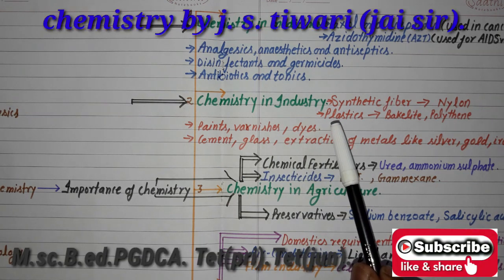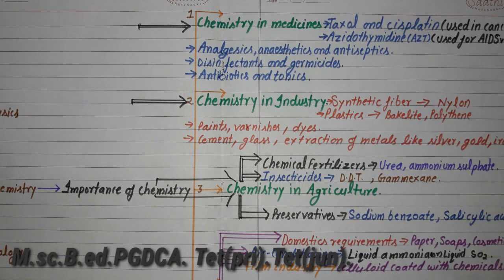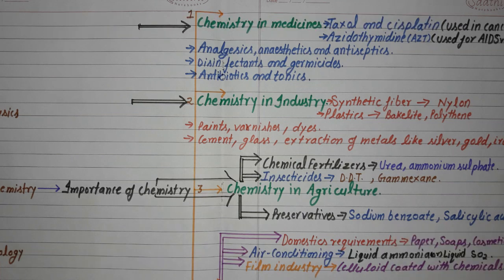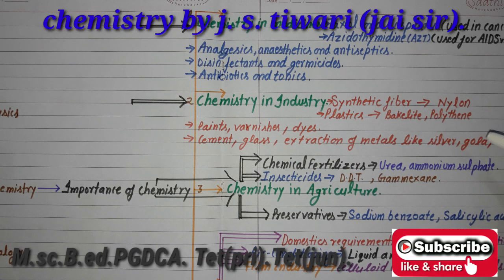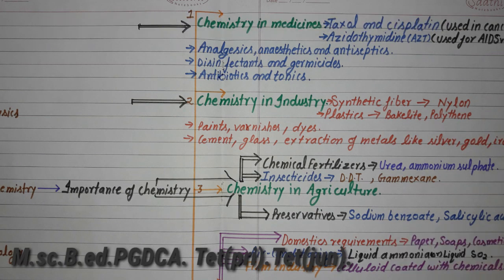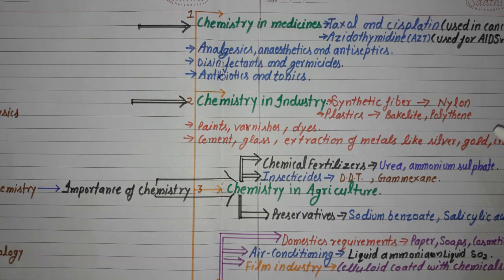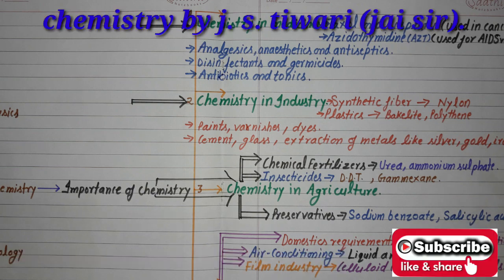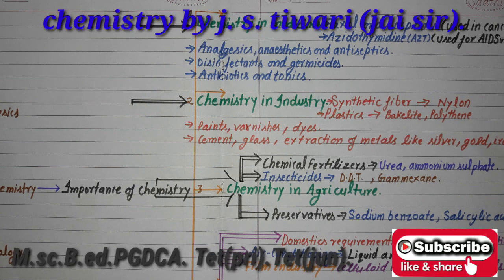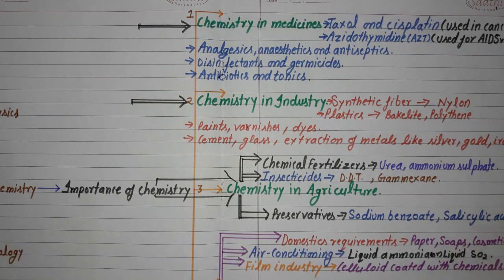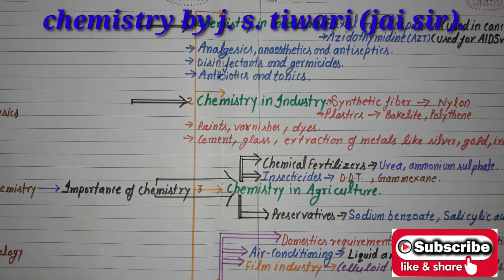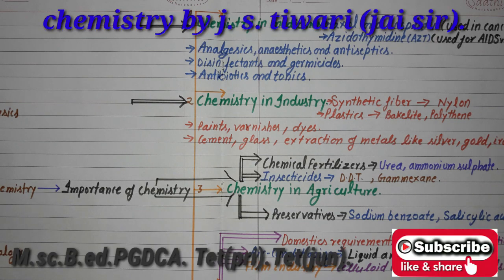Chemistry in industry — how can chemistry be used in our industry? In synthetic fiber, nylon is very important and can be used to make other parts. Plastic is also very important for us, for example bakelite, polythene, and other materials you use.